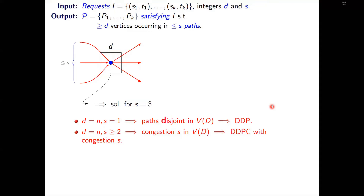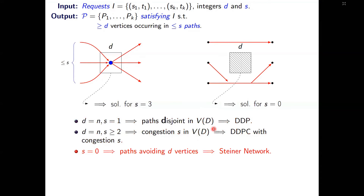The disjoint in-off path problem generalizes both the directed disjoint path problem and the directed disjoint path problem with congestion. If D equals N and S equals 1, we are asking for paths to be disjoint in every vertex of the digraph — this is the directed disjoint path problem. If D equals N and S is at least 2, every vertex occurs in at most S paths of the collection — this is the directed disjoint path with congestion. If S equals 0, we are searching for a set of D vertices to delete while preserving connectivity of every request, which is exactly the Steiner network problem.